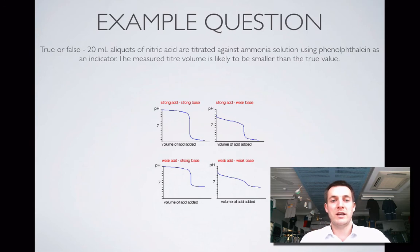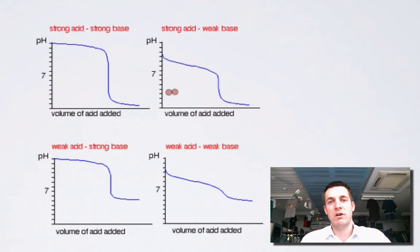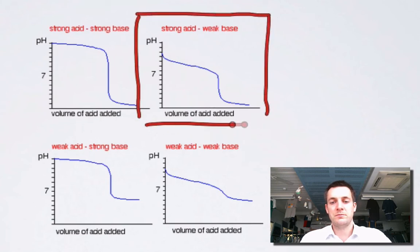Moving on, true or false: 20 milliliter aliquots of nitric acid are titrated against ammonia solution. We've got our acid to begin with, and we're adding ammonia, so these titration curves are kind of the wrong way around. We're starting from this end and heading that way. We've got nitric acid, a strong acid, so it's going to be one of these two curves. But we've got ammonia, which is a weak base, so we're not going to end up at pH 14. We're going to end up at a medium sort of pH. So we're going to use this titration curve.